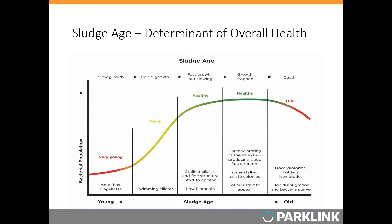If your sludge age is too young, you have more BOD than your bacteria can remove in a good time frame, meaning nitrifiers can't get enough oxygen to oxidize ammonia. Floc formers will use up all the oxygen and they compete better for oxygen than nitrifiers. If sludge age is too old, you may see poor BOD removal or disintegration and breakup of the floc as bacteria inside it die, and filamentous bacteria growth may also contribute to floc breakup.